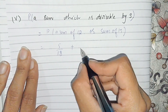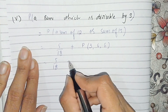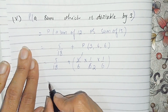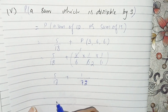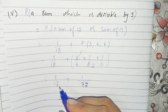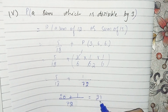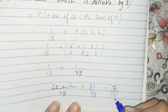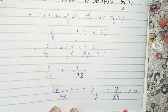A sum of 15 comes only from (3,6,6), with probability 3 over 6 times 1 over 6 times 1 over 6 = 3 over 216 = 1 over 72. Adding P(sum=12) and P(sum=15): 5 over 18 plus 1 over 72. Taking LCM of 72 gives 20 over 72 plus 1 over 72 = 21 over 72, which simplifies to 7 over 24. Question 9 is now solved.